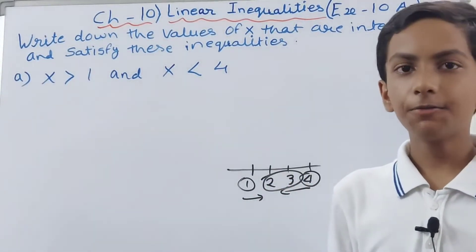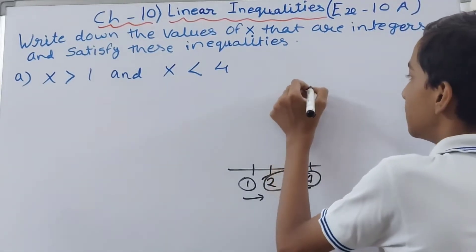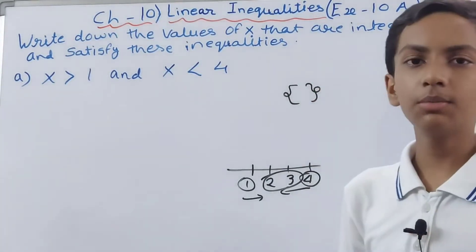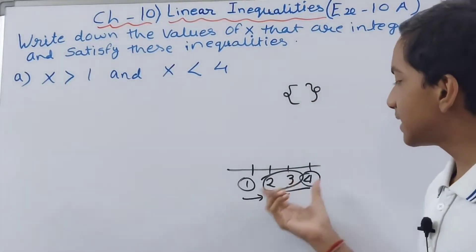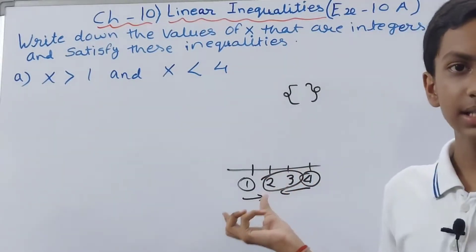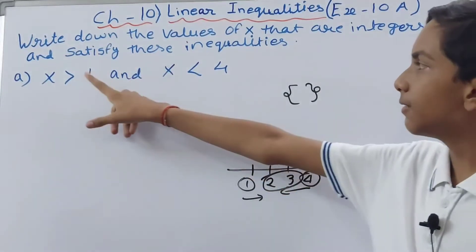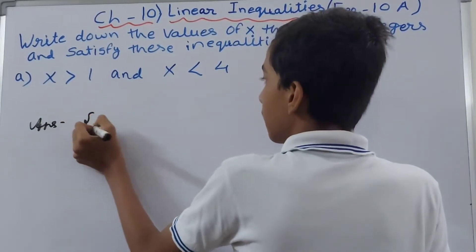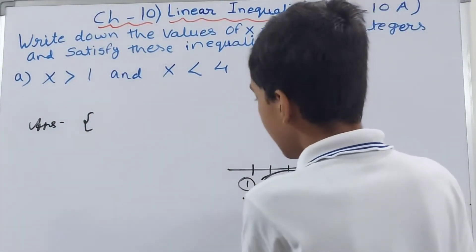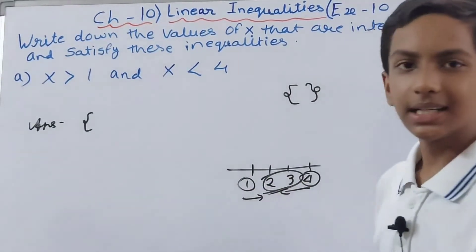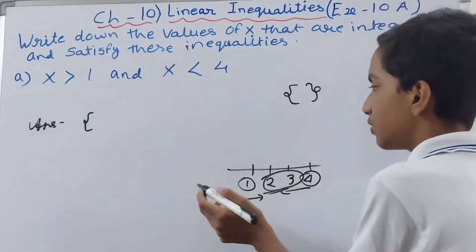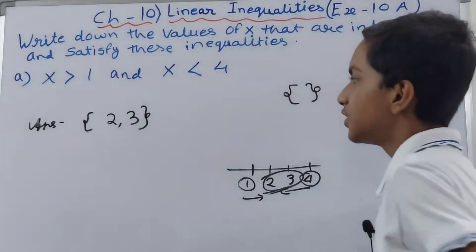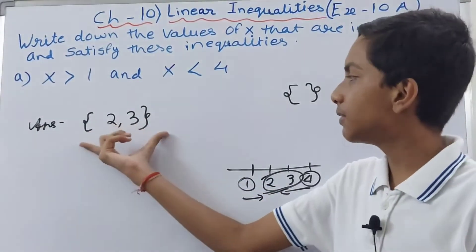To write the answer, we use curly brackets to make a set. We open the curly bracket and write the numbers that represent the value of x — that is 2 and 3 — so we write {2, 3} and close it. That is our answer: the set {2, 3}.